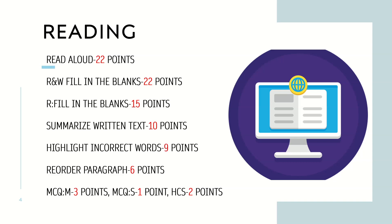Highlight incorrect words is the second-to-last module of the listening section but contributes 9 points in reading. You listen to an audio and see a paragraph on screen; you choose words that differ from the audio. There is negative marking — if there are five correct words but you choose six, including one incorrect one, you get only four points.